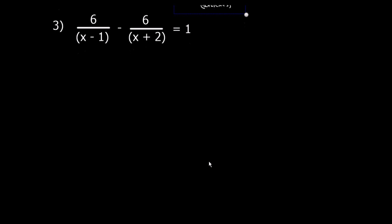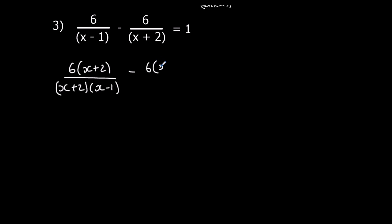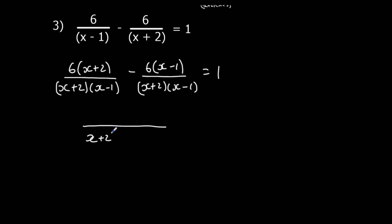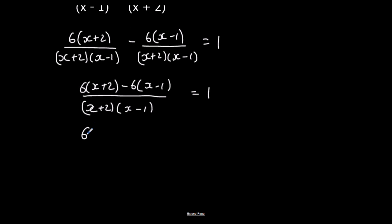Now the last one — the solve. First step, add the fractions: times this one by x plus 2 and this one by x minus 1. So we get 6 times x plus 2 over x plus 2 times x minus 1, take away 6 times x minus 1 over x plus 2 times x minus 1, equals 1. The denominator is the same, so we make it one fraction with x plus 2 times x minus 1 on the bottom. On top: 6 times x plus 2, minus 6 times x minus 1. Expanding: 6x plus 12 minus 6x, and minus 6 times minus 1 is plus 6.